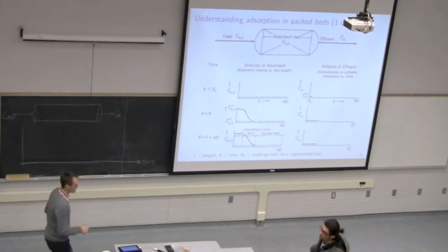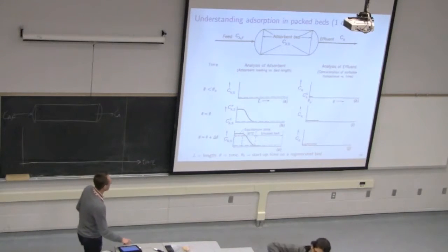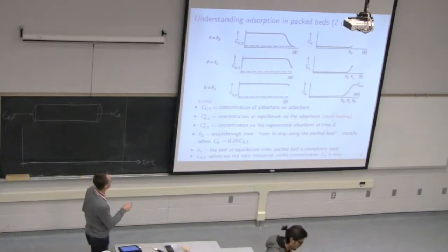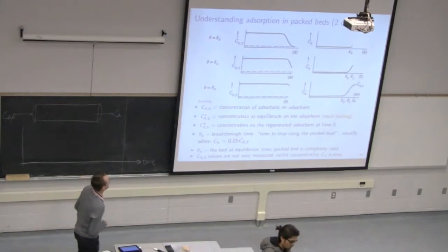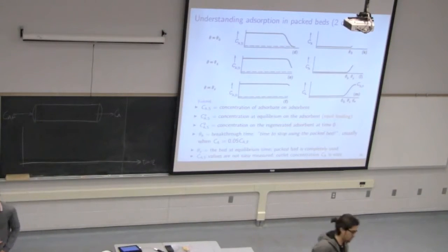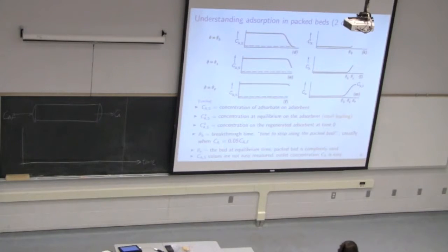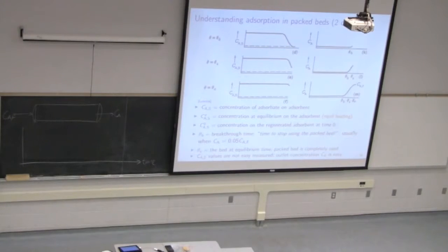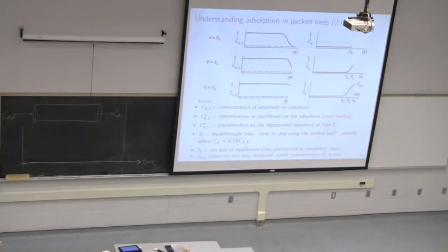I posted the paper where these diagrams are from on the course website. It's this paper here by Lutches — it's a PDF. There's a two-page description of these plots. The notation in that paper is a little different to what I've used, but the descriptions will help you understand what's going on in yesterday's discussion and the details.